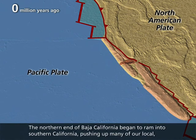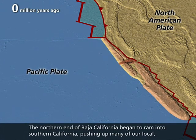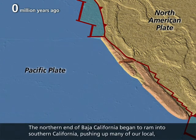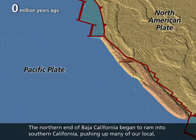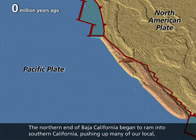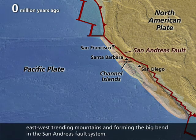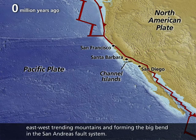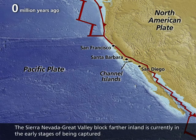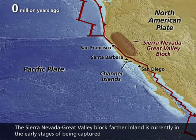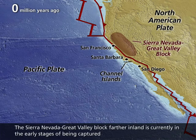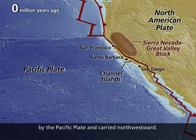The northern end of Baja California began to ram into Southern California, pushing up many of our local east-west trending mountains and forming the big bend in the San Andreas fault system. The Sierra Nevada Great Valley block farther inland is currently in the early stages of being captured by the Pacific plate and carried northwestward.